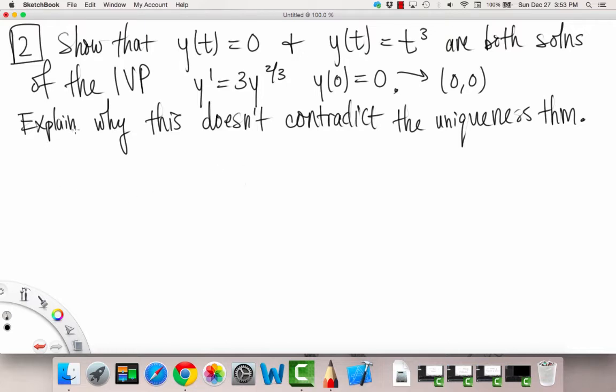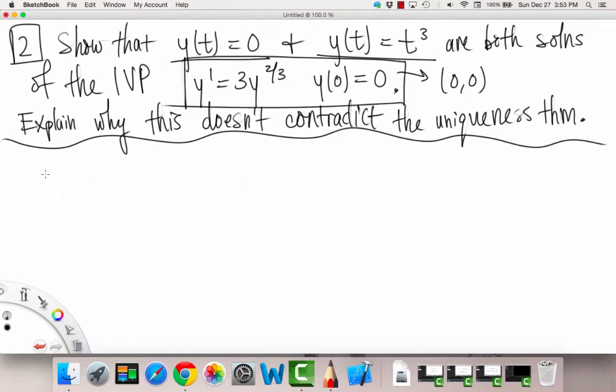And then we're going to explain why this doesn't contradict the uniqueness theorem. So let's start off by doing the first part of this problem. We're going to show that both of these are solutions to our initial value problem. So let's plug both into the ODE. Let's work with y(t)=0 first.